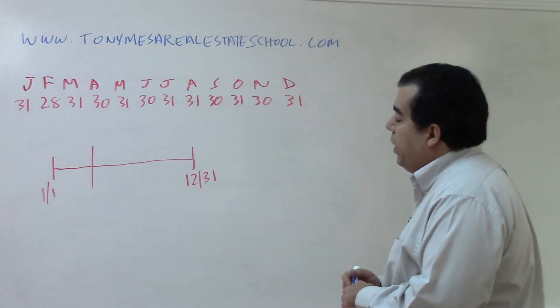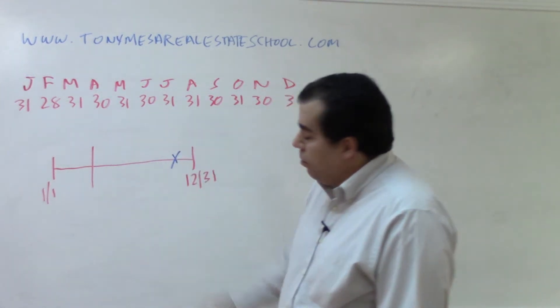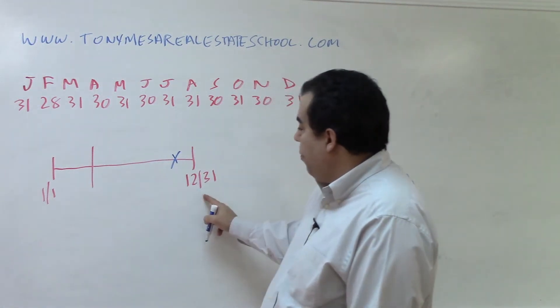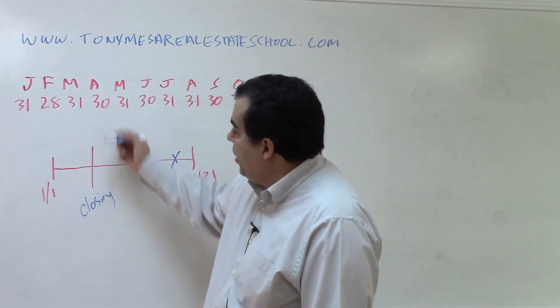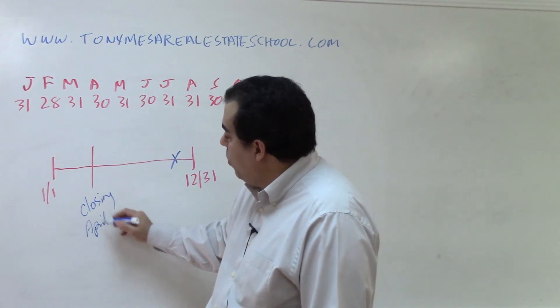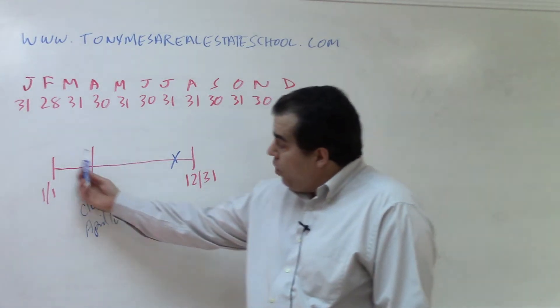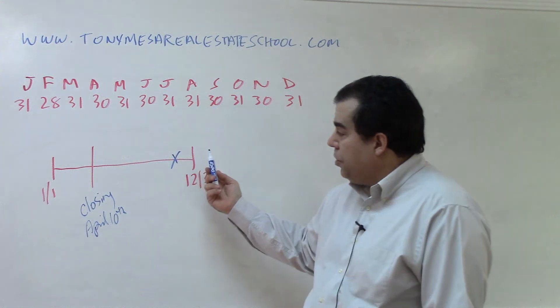All right, now what is it that happens? The tax bill comes over here in November. So here, if this is January 1 and this is December 31, and let's say we have a closing, I'm going to say April 10th. Before the closing, the owner is going to be the seller. After the closing, the owner is going to be the buyer.